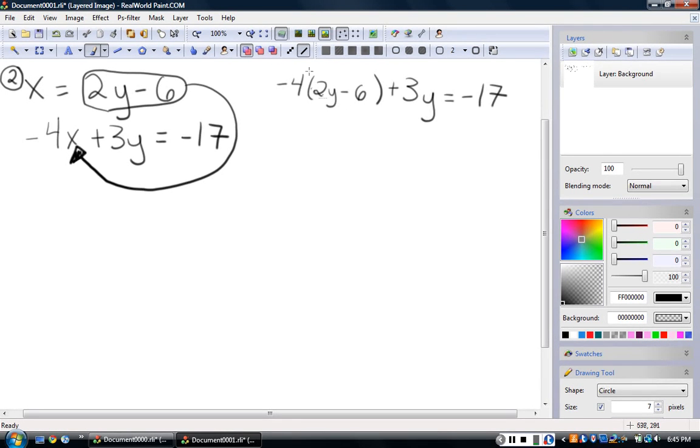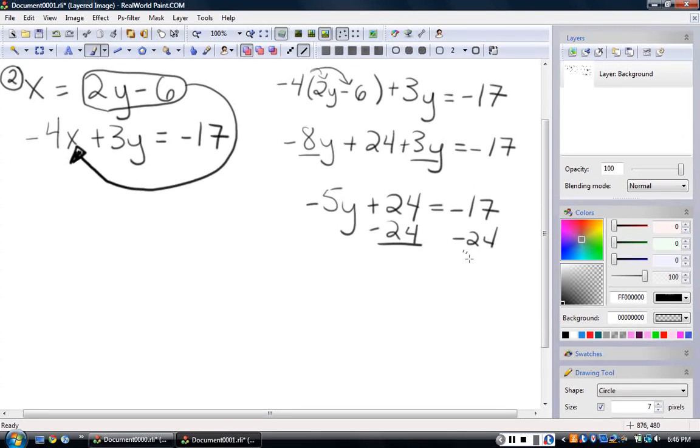Distribute your negative 4. And we'll go from there. So I got negative 8y plus 24 plus 3y equals negative 17. Combine like terms. Negative 8y and 3y are like terms. If I add those together, I get negative 5y plus 24 equals negative 17. Subtract 24 from both sides.